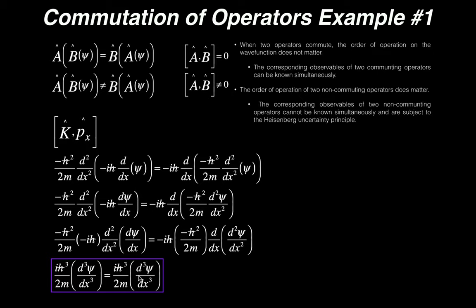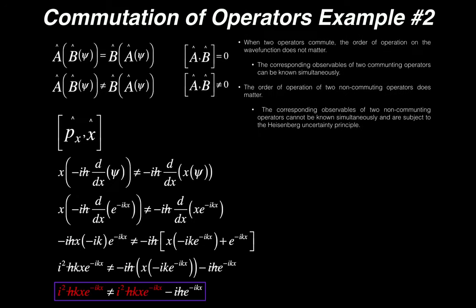That's an example of how you determine whether or not two operators commute. On an exam you'll most likely be asked directly whether two operators commute, or as a yes/no question: can you know the corresponding observables simultaneously? That second form is a hidden question where you have to do this full process. In the next video we're going to do a second example, but this time with two operators that do not commute.